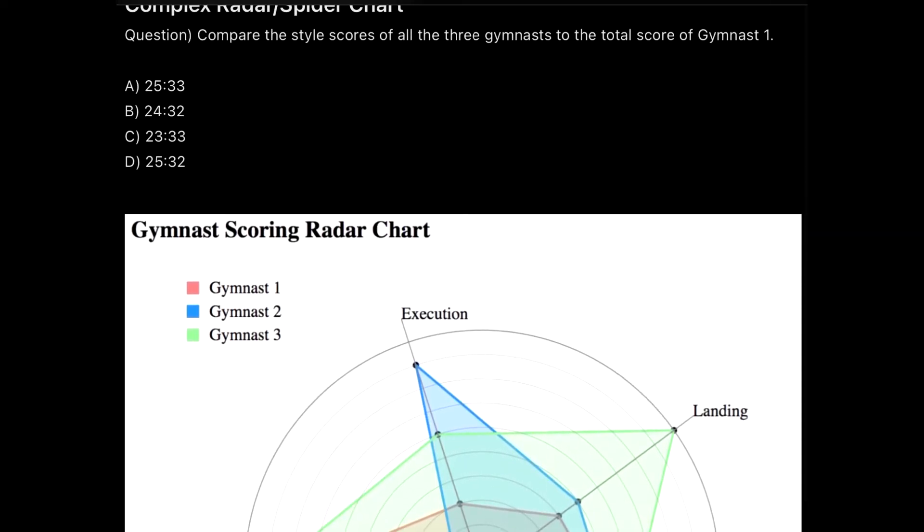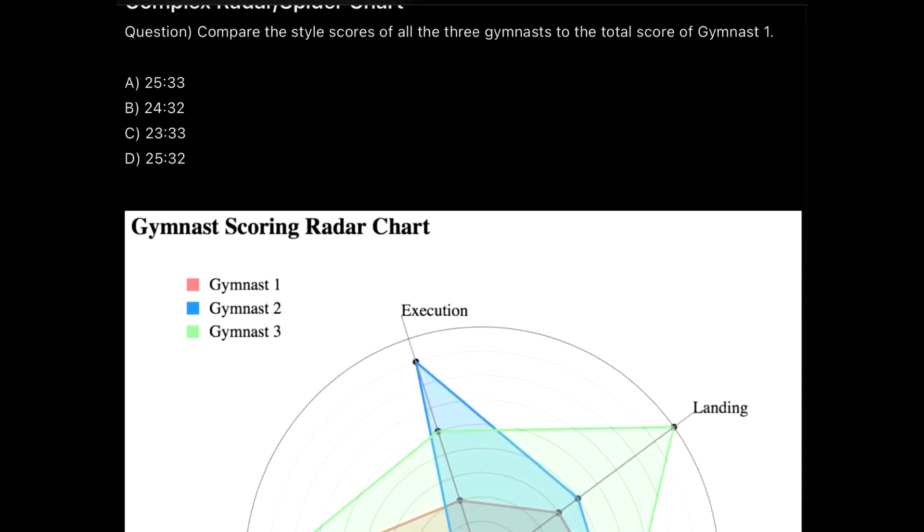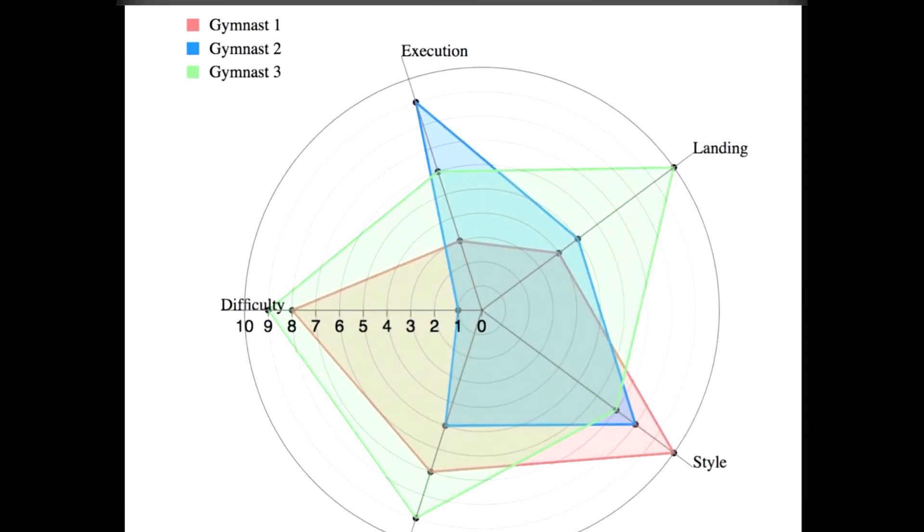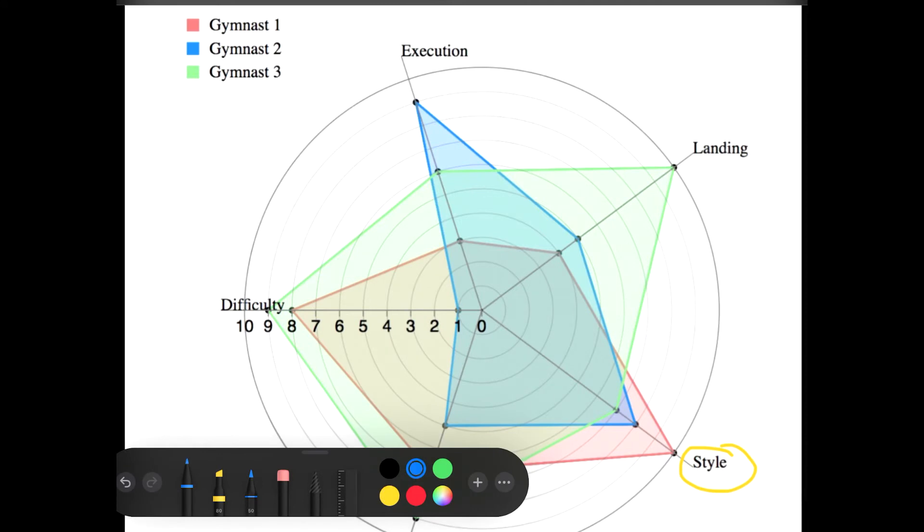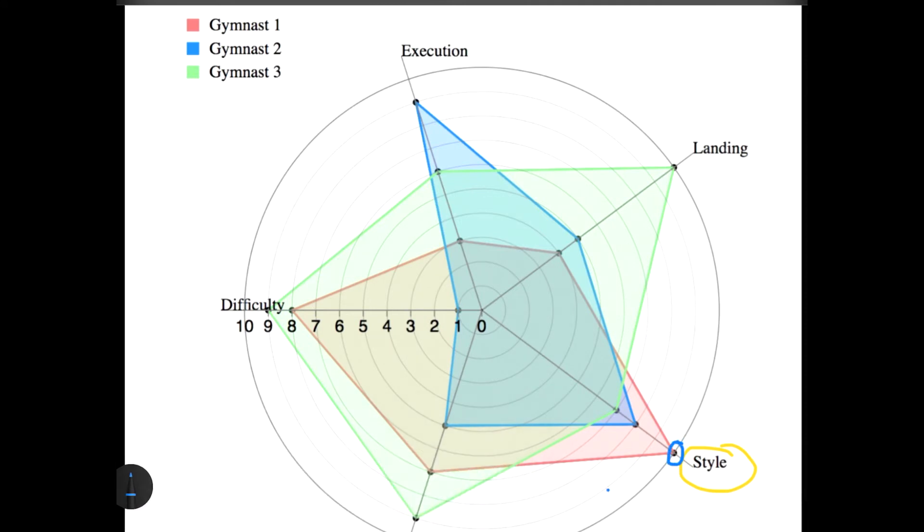Let's see the question. We have to compare the style scores of all the three gymnasts. That means I will directly shift my graph to the style part and check out the score of all three colors. The score in the red color would represent gymnast one. In style that seems to me as 10 because the outer line is 10.